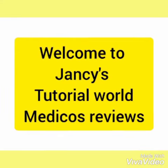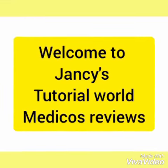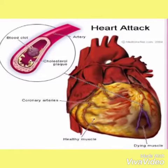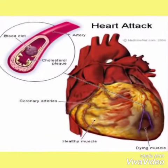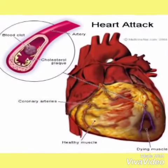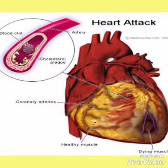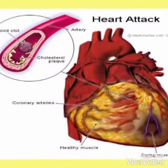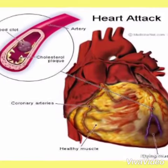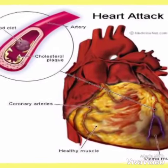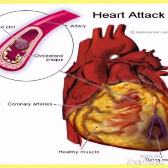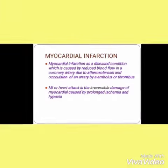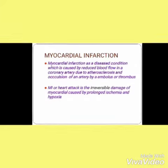Poor diet usually leads to heart problems that lead to heart attack. As shown in the diagram, it is a cholesterol plaque deposition in the coronary artery which leads to blood clot, and it leads to hypoxia and ischemia, which leads to necrosis of the tissue — which is a death of the tissue.